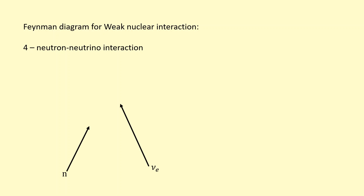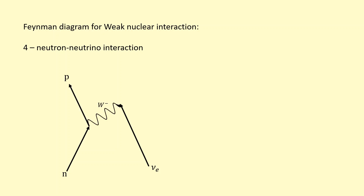In the neutron-neutrino interaction, a neutron and a neutrino come in. The neutron is going to turn into a proton — the proton has a positive charge, so there needs to be a negative charge to balance it, which is why we have a W-minus boson. That W-minus boson interacts with the neutrino over a very short range and turns into a lepton. It has to turn into a lepton to conserve lepton number, and to conserve charge the only option is the electron — lepton number is plus one before and plus one after.